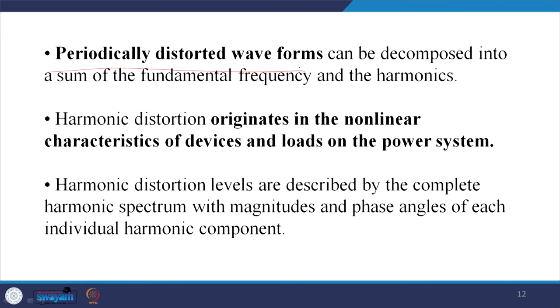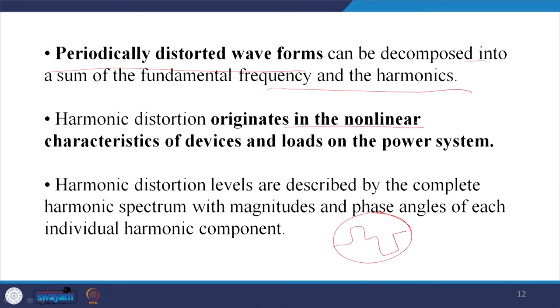A periodically distorted waveform can be decomposed into the sum of the fundamental frequency and harmonics. For example, a square waveform — which is a distorted sine waveform — can be split into sine and cosine components with corresponding harmonics in a Fourier series. Harmonic distortion originates in the non-linear characteristics of devices and loads on the power system: diode-based rectifiers, thyristors, and AC-to-DC converters all cause harmonic distortion.